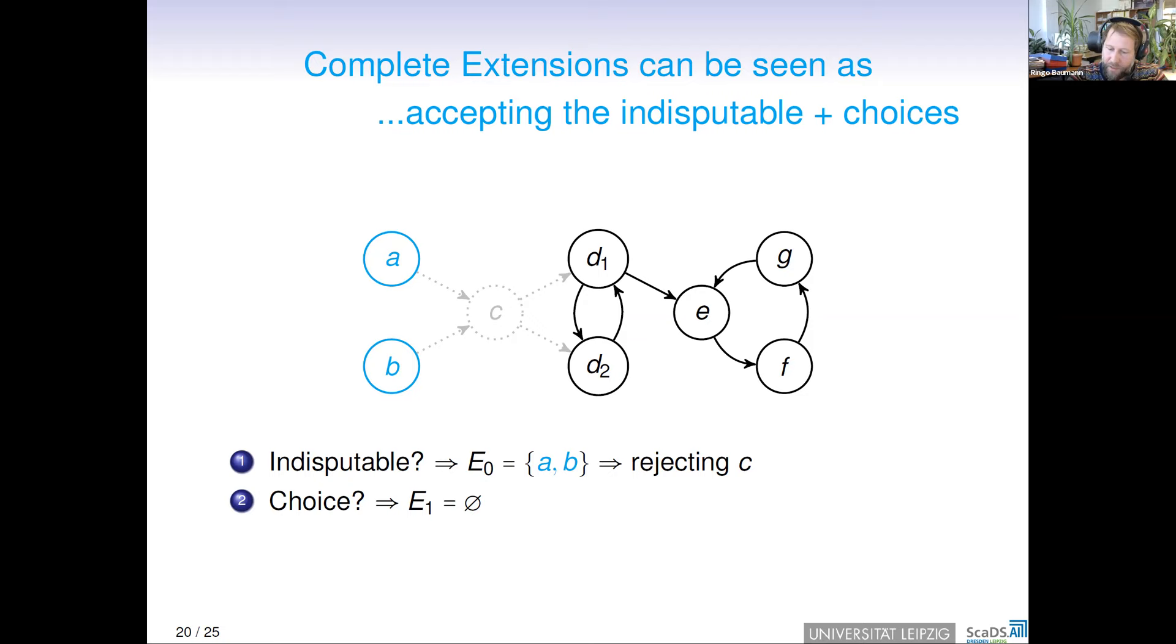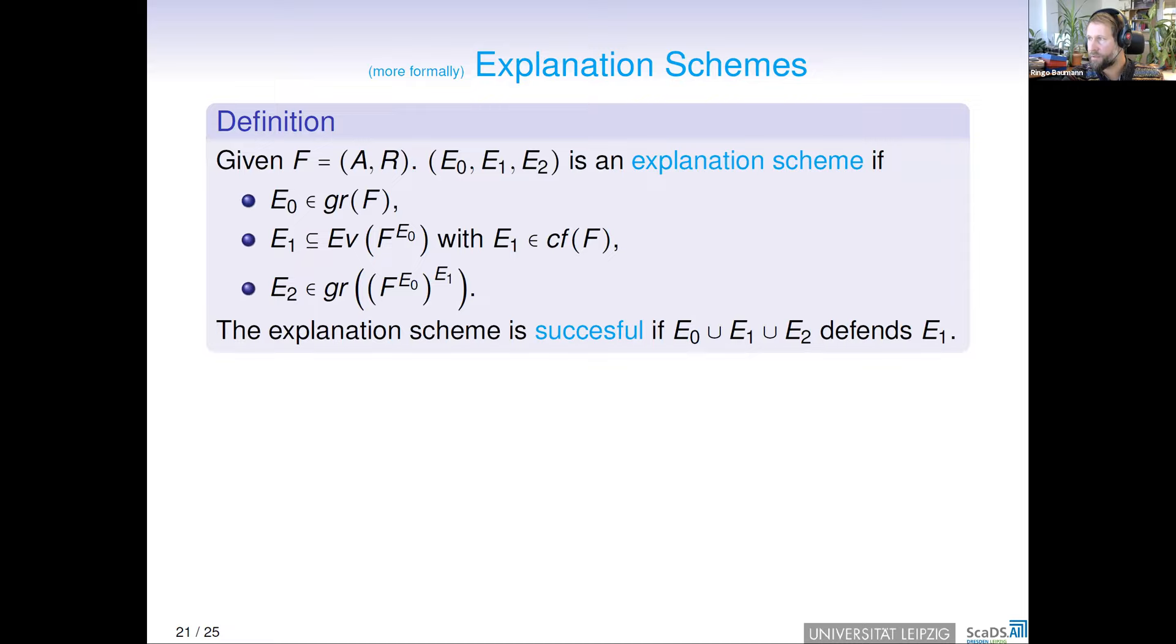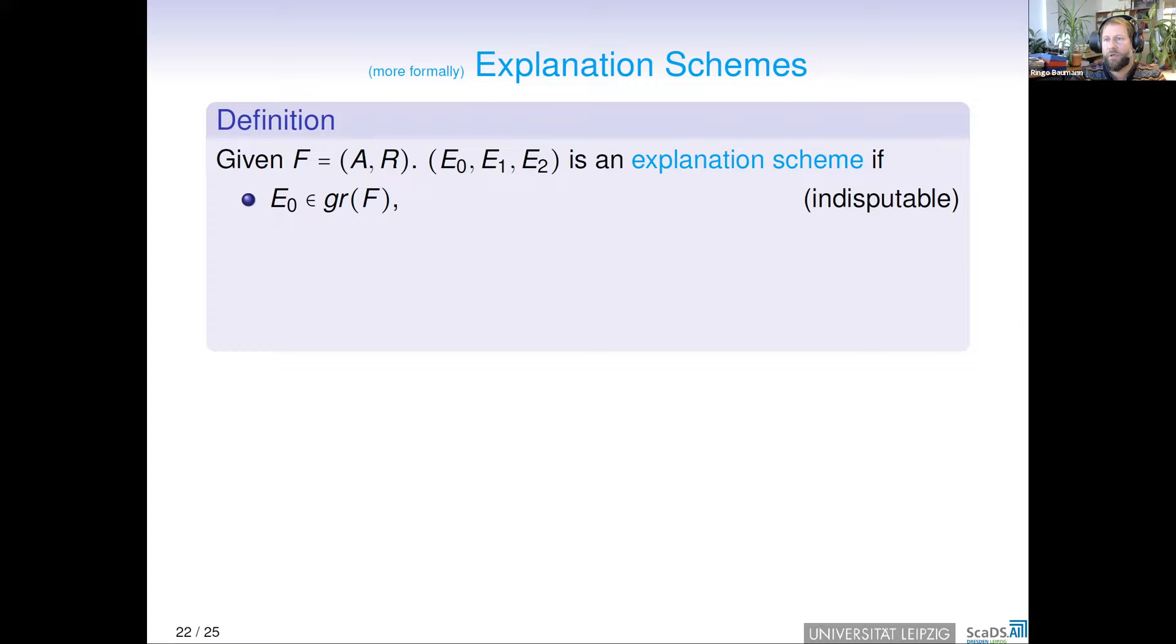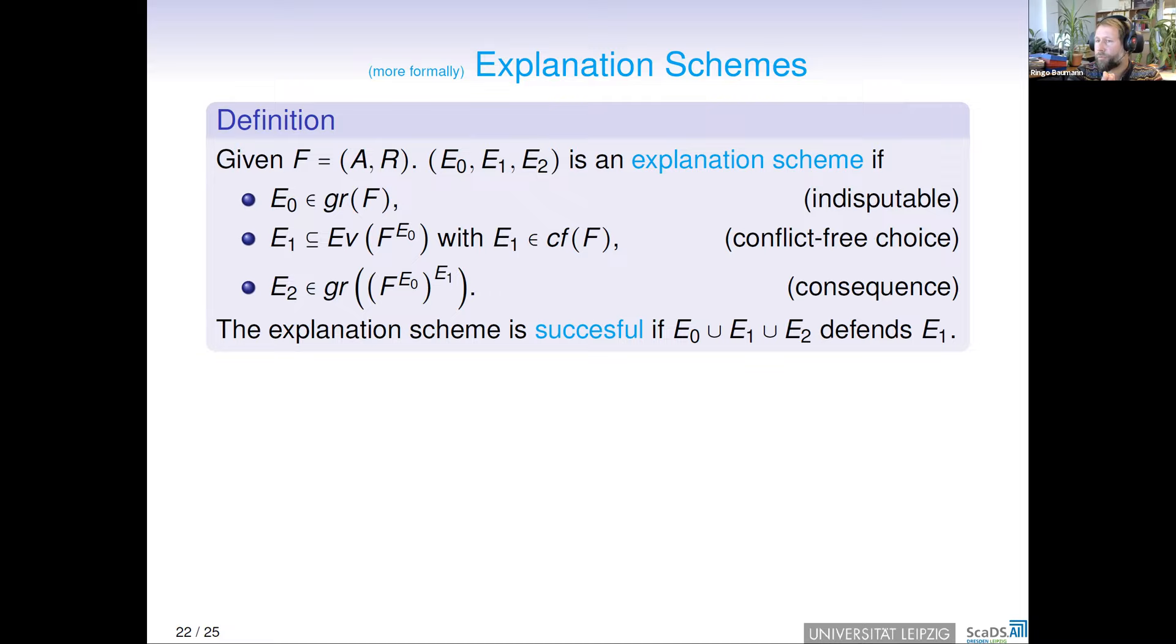This is, in a very informal way, how to understand complete extensions, but of course, we have done this more formally with so-called explanation schemes. An explanation scheme is a triple E0, E1, E2, such that E0 is the grounded extension of F. The grounded extension—all arguments in the grounded extension can be traced back to unattacked arguments. This is a very skeptical view. In the second step, we do a conflict-free choice. This means we select arguments from even cycles of the reduct from F with respect to E0. This formalizes the situation after accepting E0, because the reduct contains all arguments which are neither in E0 nor attacked by E0. Finally, E2 is again the grounded extension after accepting E1.